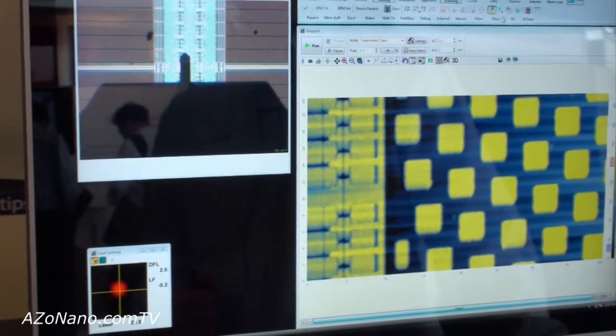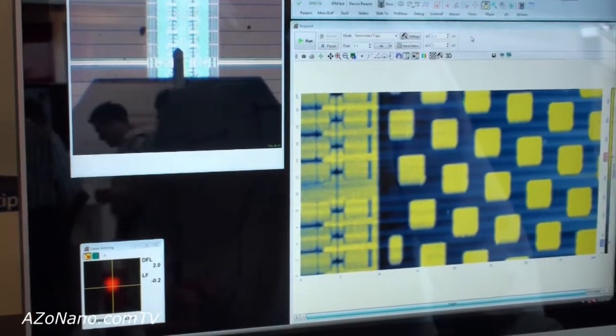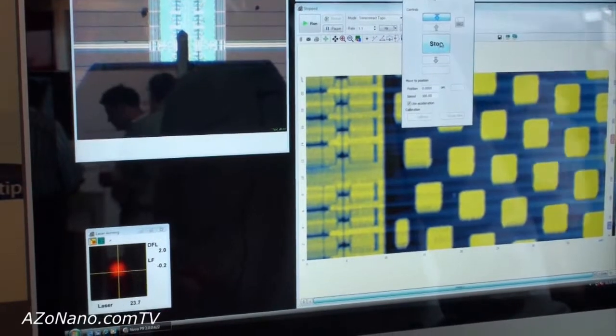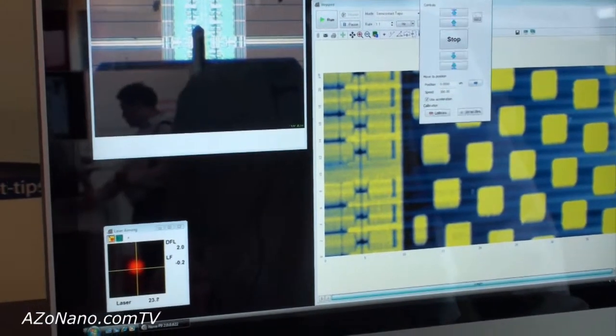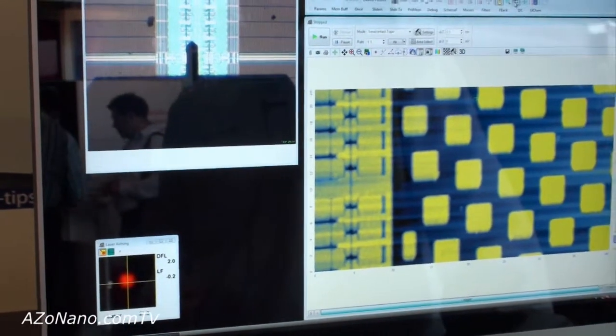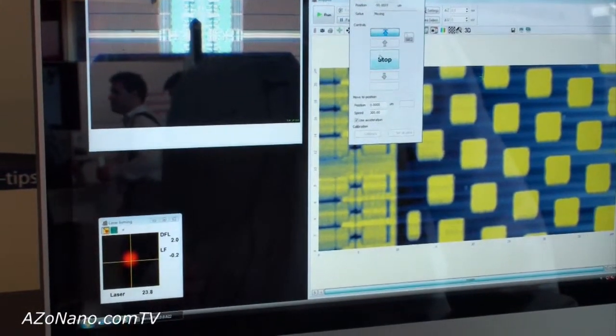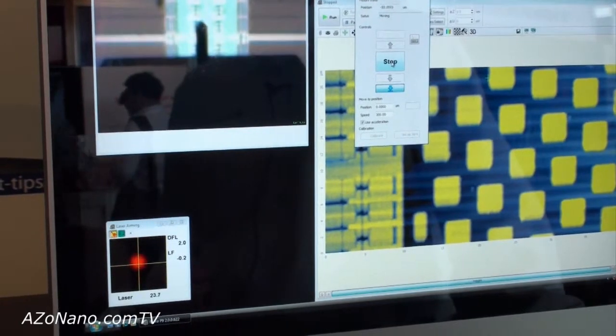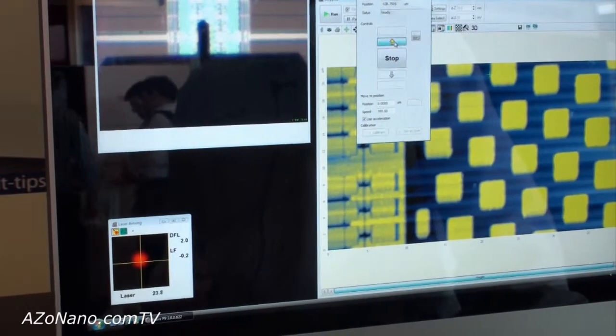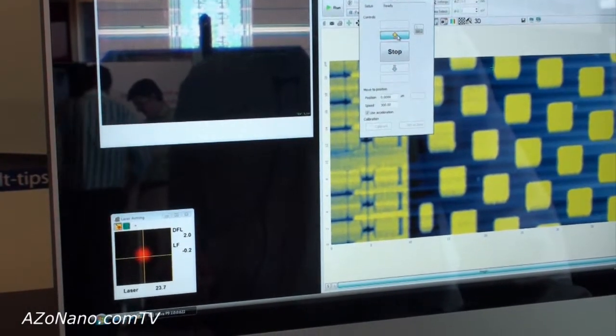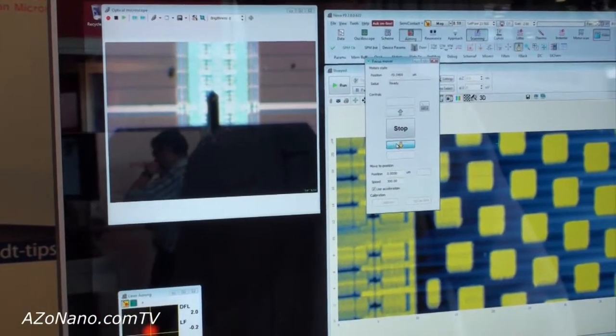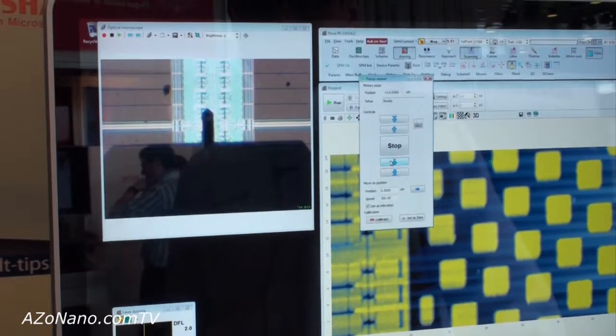To optimize the optical image, you have motorized zoom - zoom in and zoom out - and motorized focusing. We can adjust the focus like this.